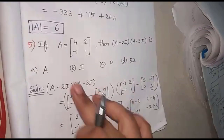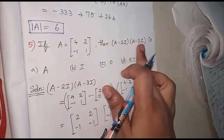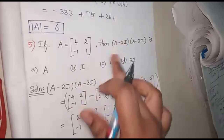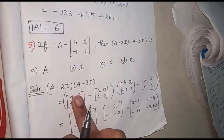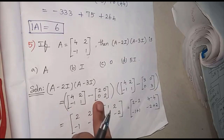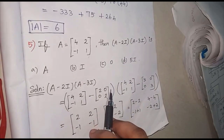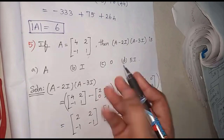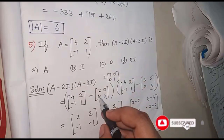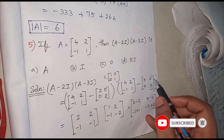The next question: if you have a matrix A, find (A minus 2I) times (A minus 3I). 2I means 2 times the identity matrix, which gives the matrix with 2, 0 in the first row and 0, 2 in the second row. Similarly, 3I gives 3, 0, 0, 3.